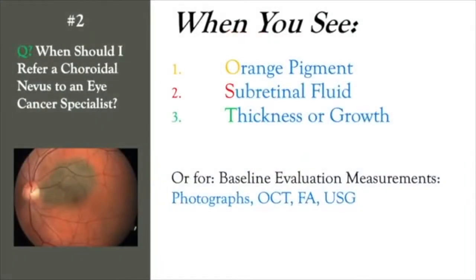That brings us to our second subject: when should I refer a choroidal nevus to an eye cancer specialist? A choroidal nevus is suspicious if it has orange pigment, subretinal fluid, thickness, and definitely growth. However, a number of patients are sent just for baseline evaluation using photography, OCT, fluorescein, and ultrasound as needed. Once documented, the patient can go back to the referring doctor for periodic monitoring.